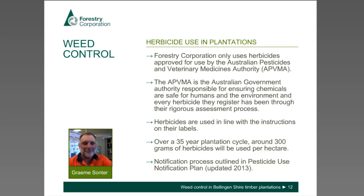Forestry Corporation only uses herbicides approved by the APVMA — the Australian Pesticides and Veterinary Medicines Authority — the government body responsible for ensuring chemicals are safe for humans and the environment. Every herbicide they register has been through rigorous assessment processes. Herbicides are used in line with label instructions, and over a 35-year rotation cycle we're roughly talking about 300 grams of herbicide used per hectare. The notification processes we use are outlined in our Pesticide Use Notification Plan, last updated in 2013, which is available on our website.